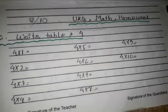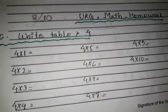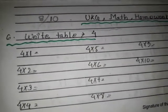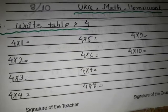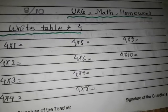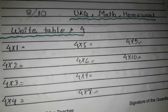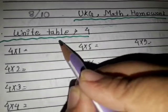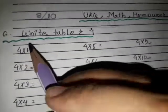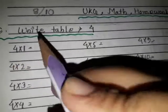U.K.G. Subject Math Homework. 8 October. Good morning, student. We start our class. Right, table 4. I'm at the forward table.